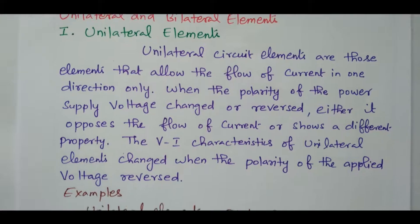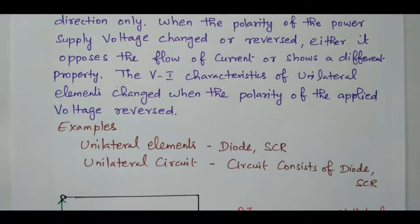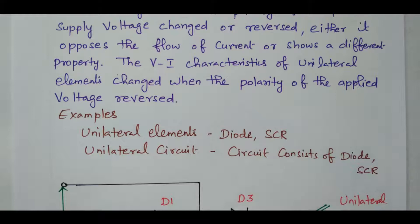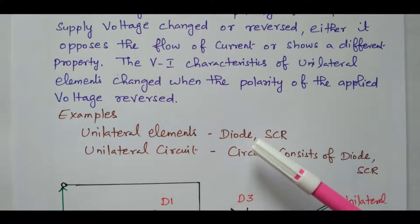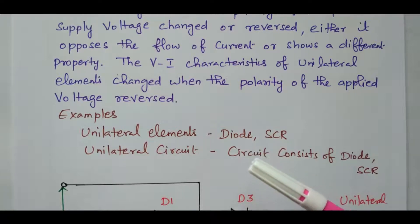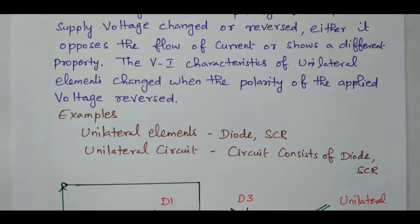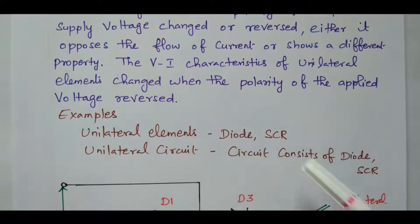Examples of unilateral elements are the diode and SCR. For the diode, there is forward bias and reverse bias. If the anode is positive with respect to cathode, this is forward bias. If the anode is negative with respect to cathode, it is reverse bias. During forward bias, conduction occurs; during reverse bias, there is no conduction. When the polarity changes, the property of the diode also changes.